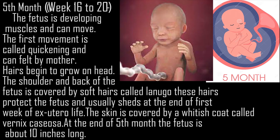Fifth month, week 16-20. The fetus is developing muscles and can move. The first movement is called quickening and can be felt by the mother. Hair begins to grow on the head. The shoulders and back of the fetus are covered by soft hairs called lanugo, which protect the fetus and usually shed at the end of the first week of ex-utero life. The skin is covered by a whitish coat called vernix caseosa. At the end of the fifth month, the fetus is about 10 inches long.